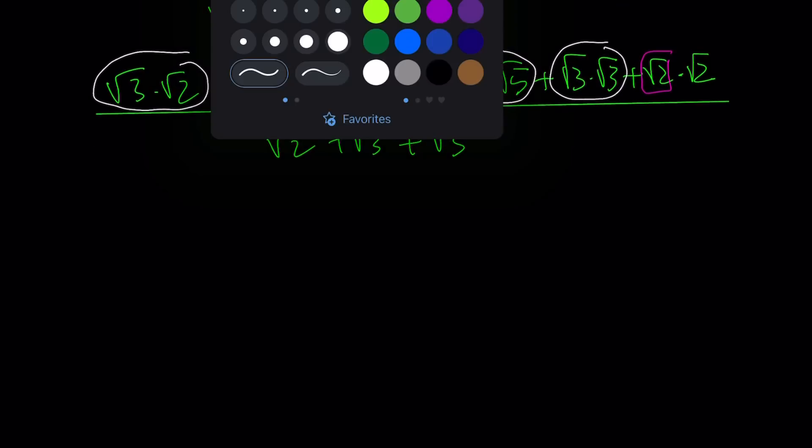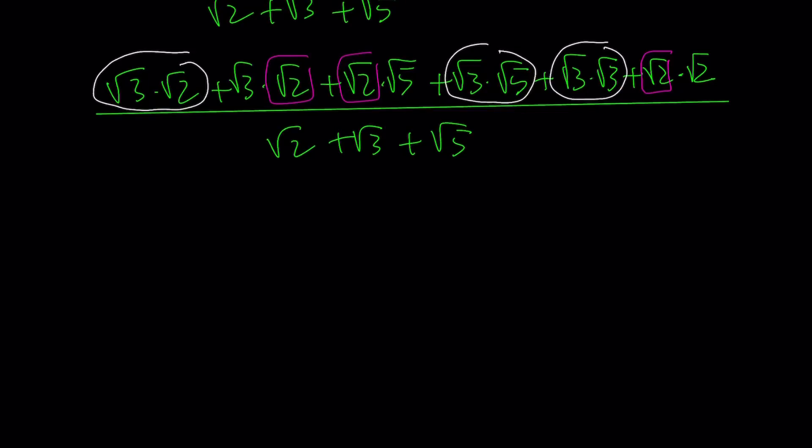So we're going to have the first three terms. What is the common factor? It is root 3. So let's take it out. We're going to get root 2 plus root 5 plus root 3.